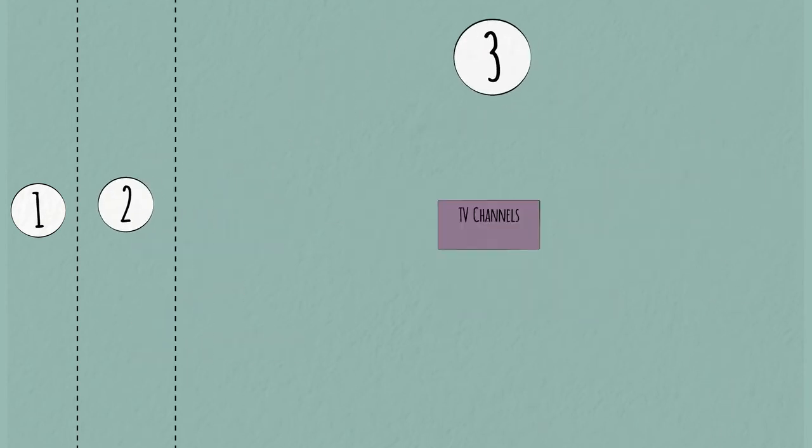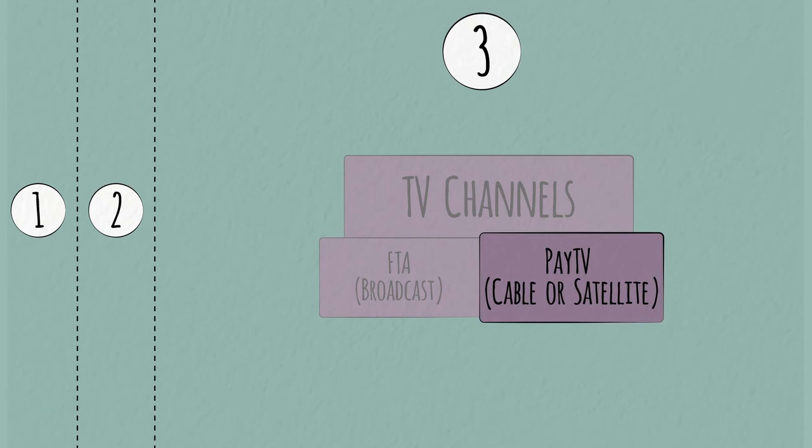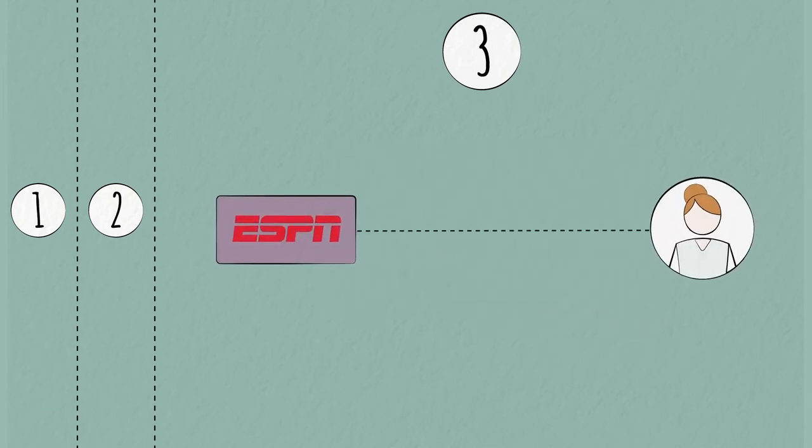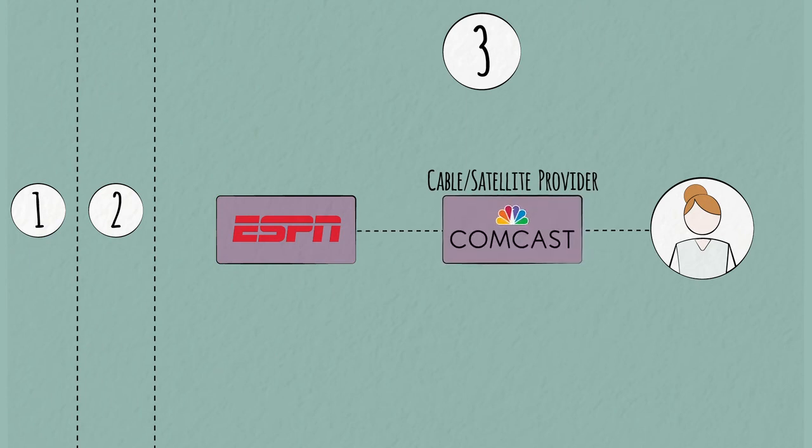Our third model is pay TV, which also has intermediaries. Most subscribers of a popular paid channel like ESPN don't pay the channel directly for access. They go to a cable or satellite provider, such as Comcast in the US, who installs a connection to their home. The consumer then pays Comcast for a bundle of hundreds of channels, which includes ESPN. Providers like Comcast are known as multi-channel video programming distributors, or MVPDs.